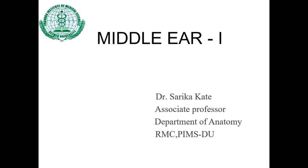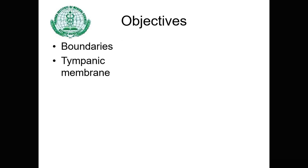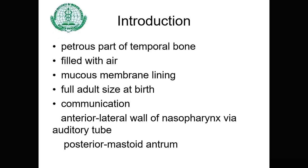Good morning. Today's topic is the middle ear, divided into two parts. In part one, we will see the boundaries of the middle ear cavity and the details of the tympanic membrane. The middle ear is located in the petrous part of the temporal bone, filled with air and lined by a mucous membrane. A characteristic feature is that it is of full adult size at birth. It communicates anteriorly with the lateral wall of the nasopharynx via the auditory tube.